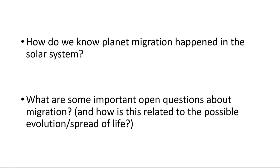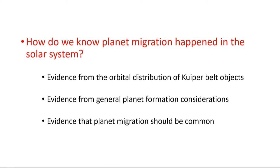How do we know this actually happened in our solar system? I'm going to talk about the evidence we have from the distribution of orbits in the outer solar system, some thoughts from general considerations of how planet formation proceeds, and then some evidence that we think this should be a pretty common process throughout the universe.